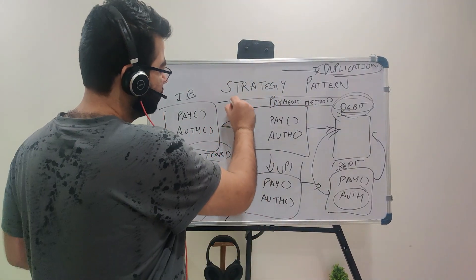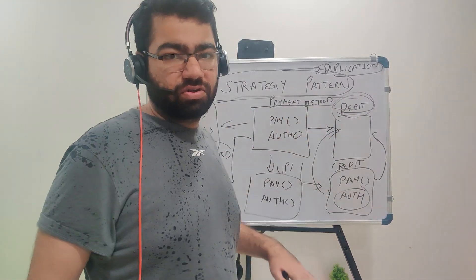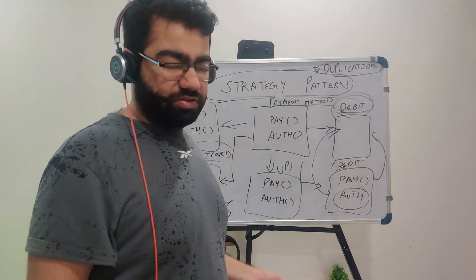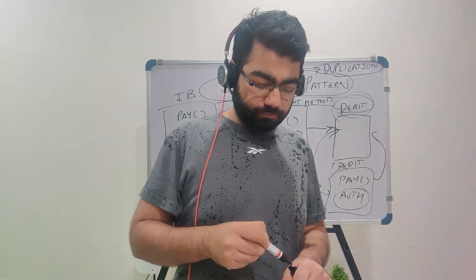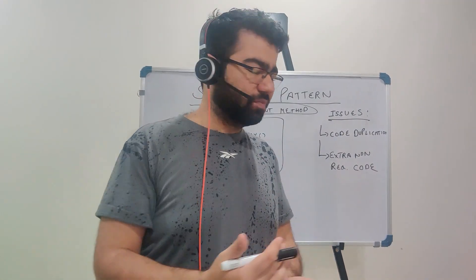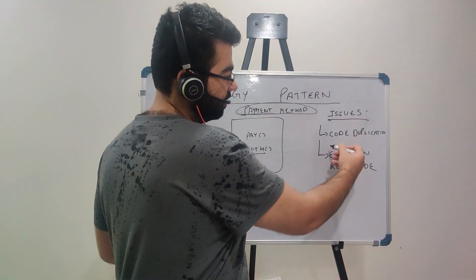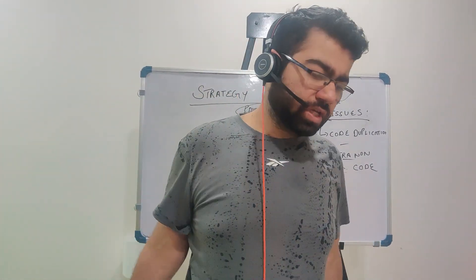That's where the strategy pattern comes into place and helps us solve these issues. We saw two issues generated due to inheritance when creating the payment method structure: code duplication, and extra code that is not required being present in our codebase. Let's see how the strategy pattern solves both of these issues.